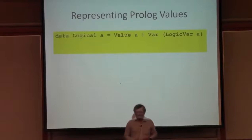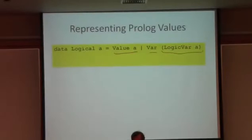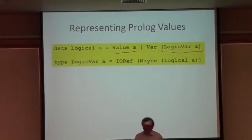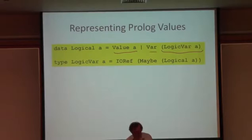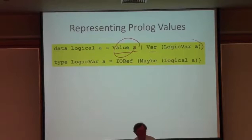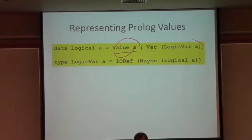Once you've filled X in with 3, then from that point on within that solution, X is entirely equivalent to 3. Variables can also be filled in with references to another variable — we may not know what X and Y are, but we may discover they're the same, so we make one variable point to the other. And when Y finally gets filled in with a value, both X and Y represent that value. So I'm going to define a type Logical A to represent a logical value corresponding to type A, with two alternatives: either I know the value and it's an A, or I don't — it's an unknown variable containing a LogicVar, which is a reference cell that may contain another Logical.